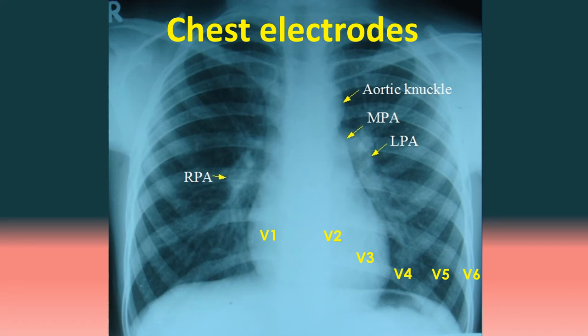Chest leads are named C1, C2, C3, C4, etc. by some manufacturers, where C stands for chest. In the conventional naming system, V stands for voltage.